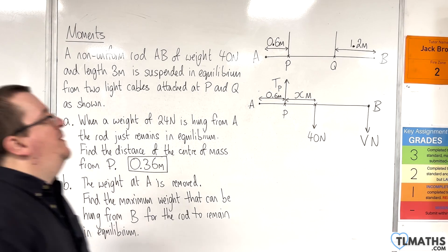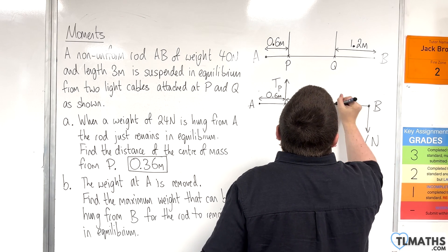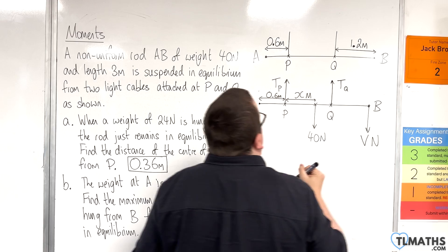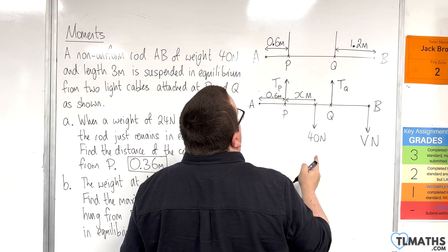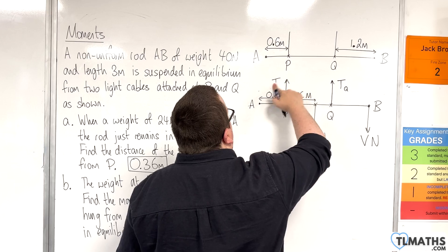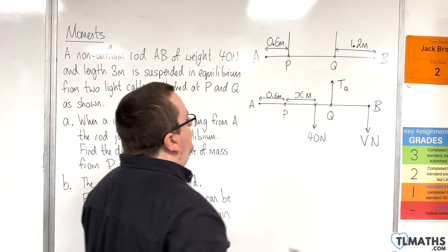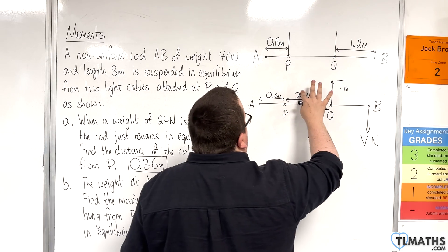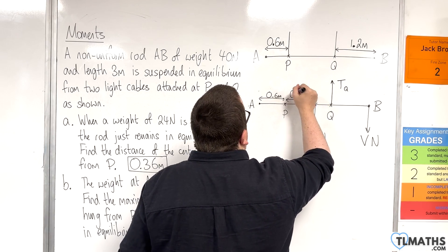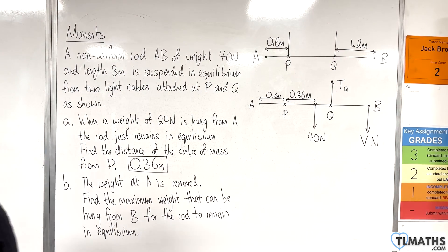then we're going to be on the point of tilting, but this time about Q. So there's going to be a tension in Q. But the consequence of that is that the tension in P is going to go to zero, because we're tilting about Q. And we've just worked out that distance there. So that was 0.36 metres.